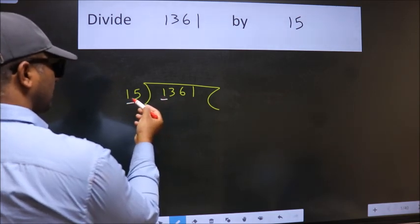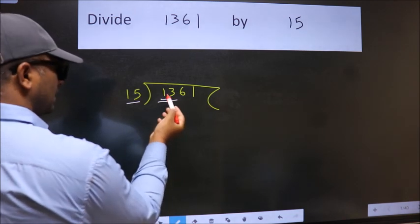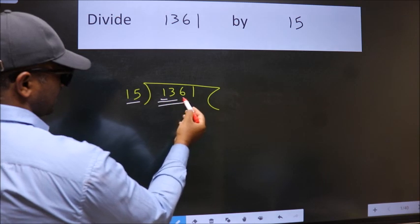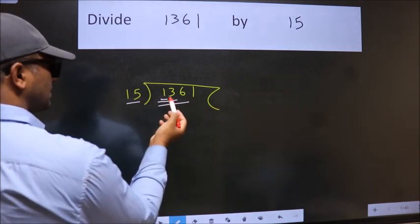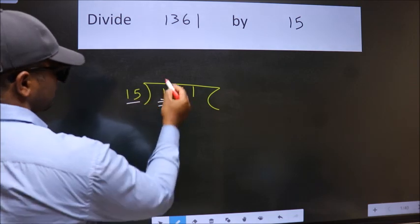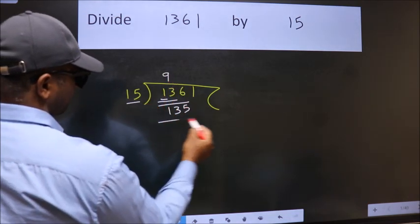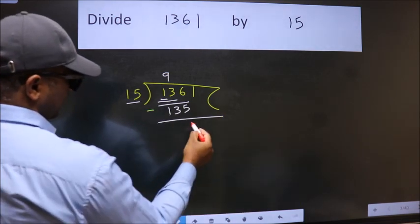1 is smaller than 15, so we should take 2 numbers, 13. 13 is still smaller than 15, so we should take 3 numbers, 136. A number close to 136 in 15 table is 15 nines, 135. Now we should subtract. We get 1.